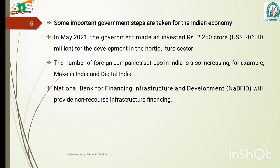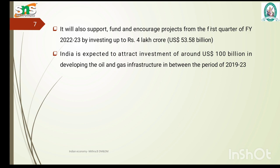Some important government steps taken for the Indian economy: in May 2021, the government invested Rs. 2250 crores for the development of the horticulture sector. The number of foreign companies set up in India is also increasing. The National Bank for Financing Infrastructure and Development will provide non-recourse infrastructure financing, and will support and increase projects from the first quarter of 2021-22 to 2023 by investing up to 4 lakh crores. India is also expected to attract investment of around 100 billion dollars in developing the oil and gas infrastructure between the period of 2019 to 2023.